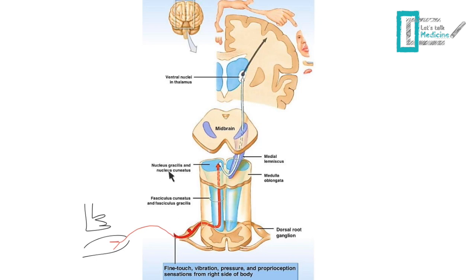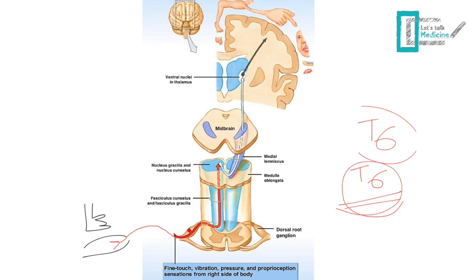As the axon moves upward within the dorsal column, it is called either fasciculus gracilis or fasciculus cunatus based on its origin. Fasciculus gracilis carries fibers from the lower limb — below T6. Fasciculus cunatus carries fibers from the upper limb — above T6. So if the nerve fiber entered the spinal cord below T6, it's gracilis; above T6, it's cunatus.